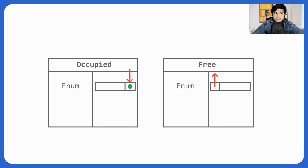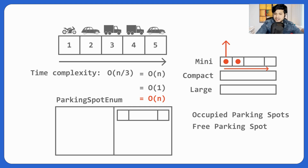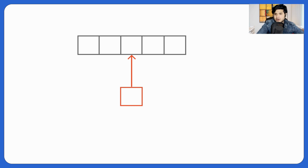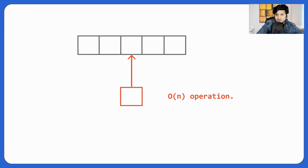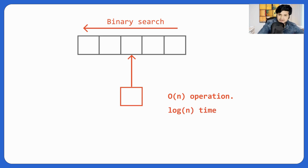The spot should be put back at the right place, because parking spots are stored in a sorted format based on floor and ID. We could iterate over the free list to find the right position, but that would be O(n). Since the list is already sorted, we can use binary search — first binary searching on floor, then placing it at the right position — which takes O(log n) time, far better than O(n).